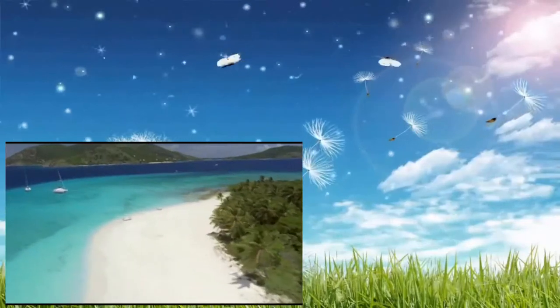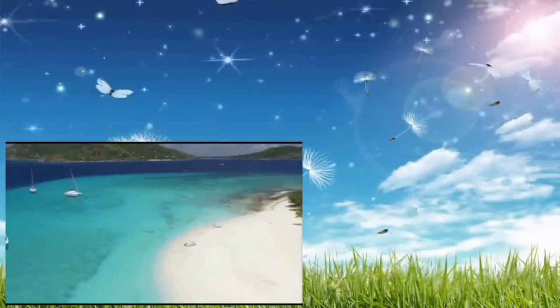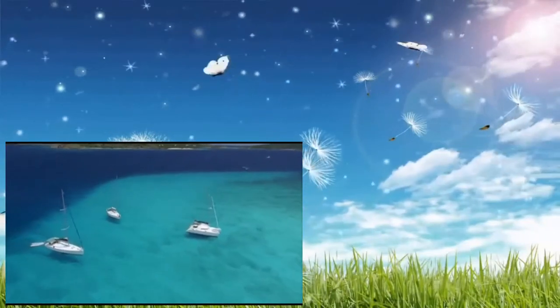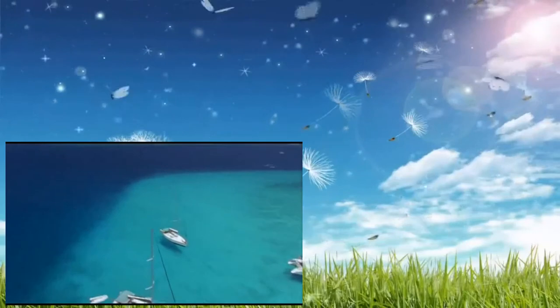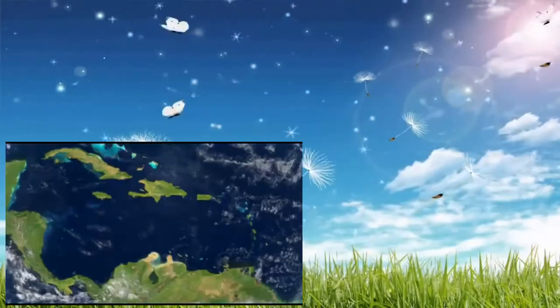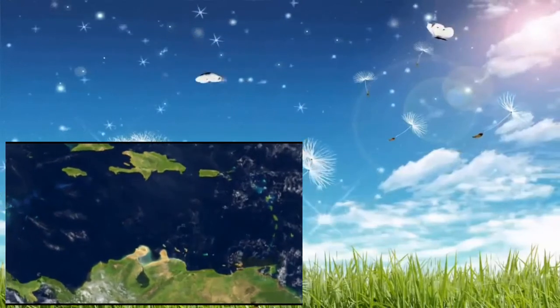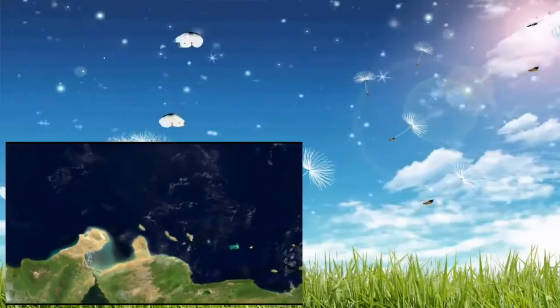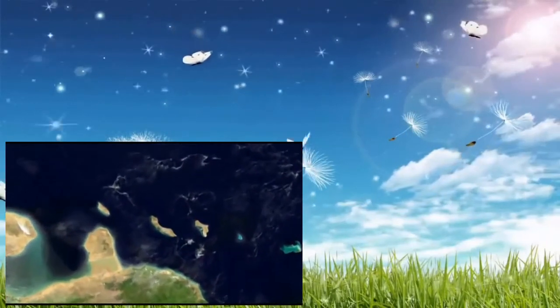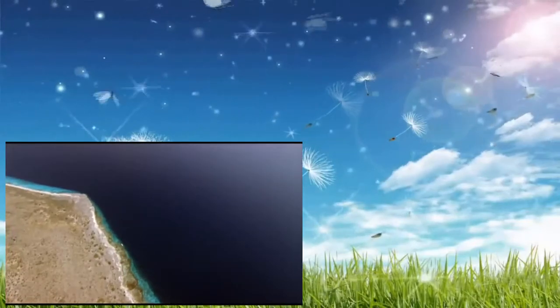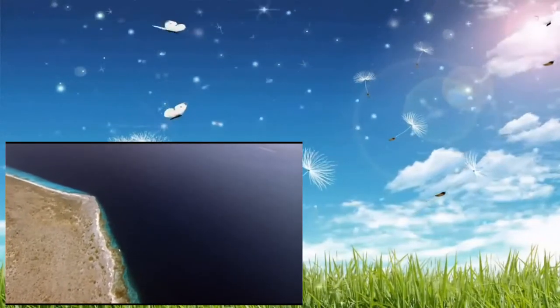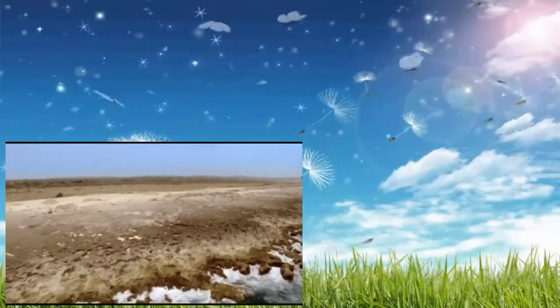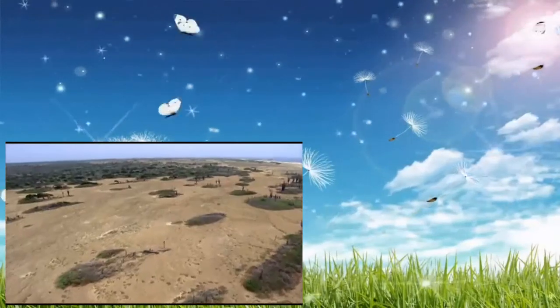It isn't just the geology that creates such a variety of islands, it's climate too. At the Caribbean's southernmost extreme, the climate has created an extreme environment. Less than 60 miles off the coast of South America are Aruba, Bonaire and Curacao, the ABC Islands. A world away from lush volcanic slopes, these are the desert islands of the Caribbean.